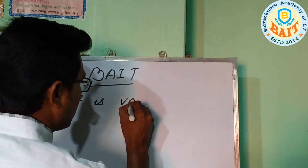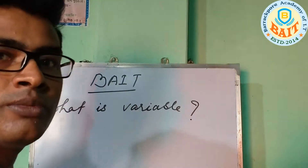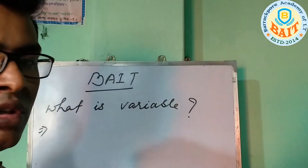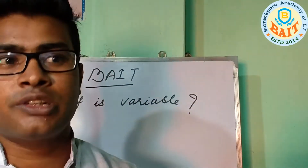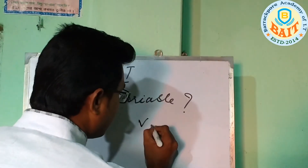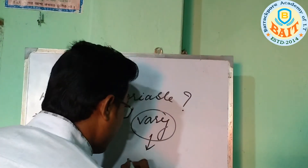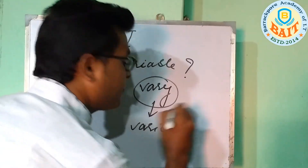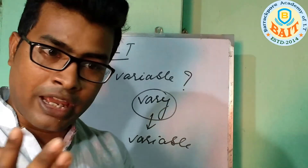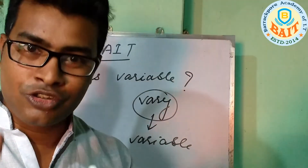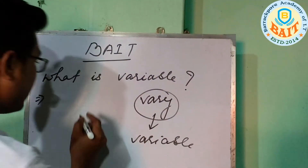What is a variable? Variable means change — something that can be changed. As an example, suppose a is equal to 10. Here, a is a variable and 10 is the value stored in it.